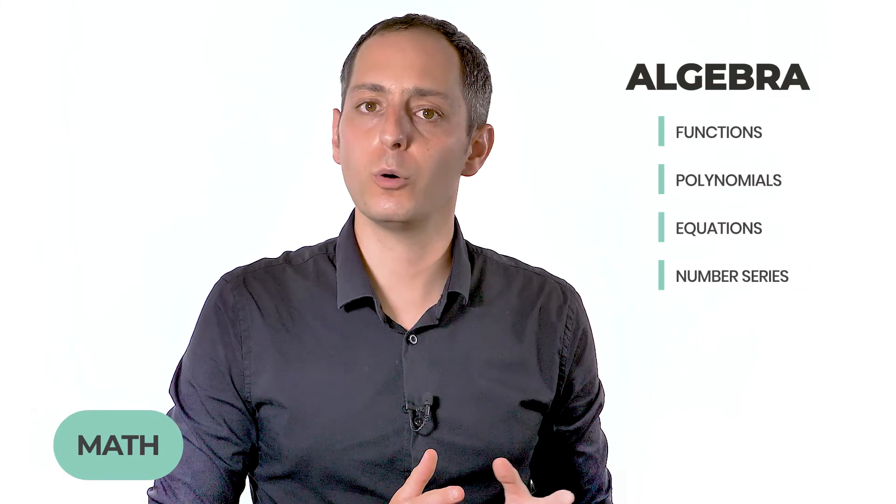The math section tends to be more complicated compared with other pre-apprenticeship exams. It includes mostly algebra questions such as functions, polynomials, equations, etc. Number series questions will also sometimes appear. The section will usually contain 33 questions to be solved in 46 minutes.